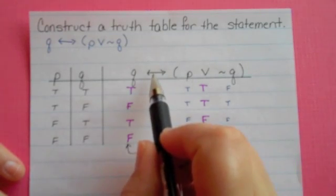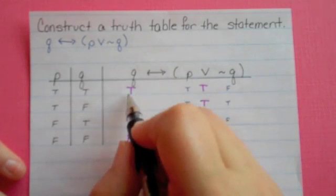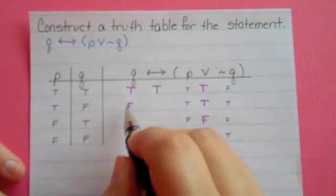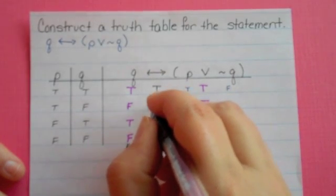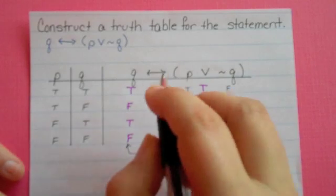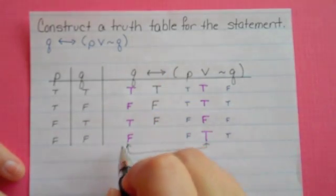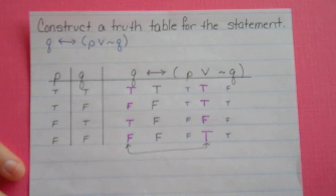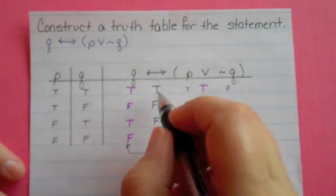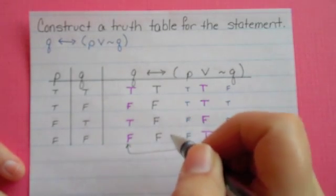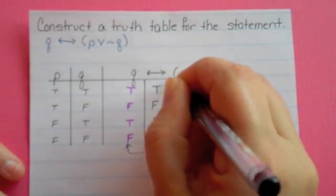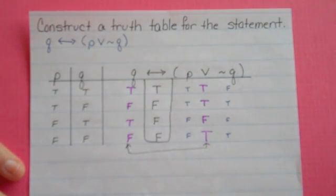Remember the rule for the biconditional: if they're the same, it's true. True if and only if true — true. False if and only if true — false. True if and only if false — false. False if and only if true — false. So my answer here is the final column: true followed by three falses. To indicate that, if I'm doing this by hand on my paper, I'm just going to put a box around my answer.